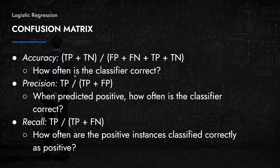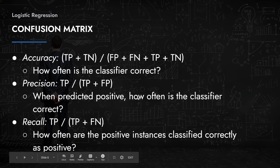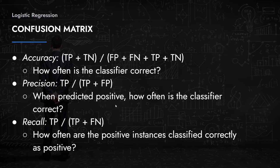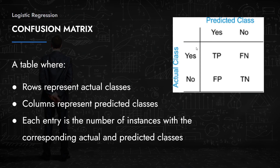Recall is TP / (TP + FN). It answers the question: how often are positive instances correctly classified as positive? TP + FN represents all patients who actually have cancer — some may have been predicted as not having cancer. Recall measures: out of all patients in the 0.1% who truly have cancer, how many did we successfully predict as having cancer?